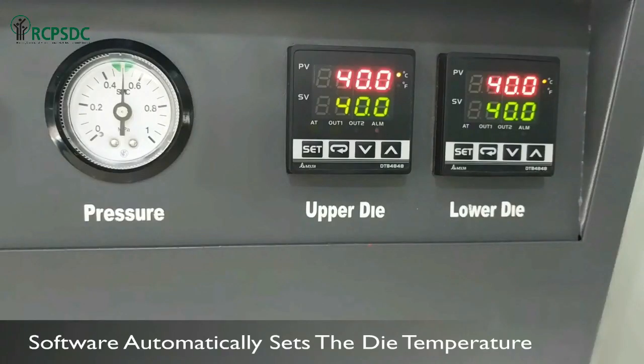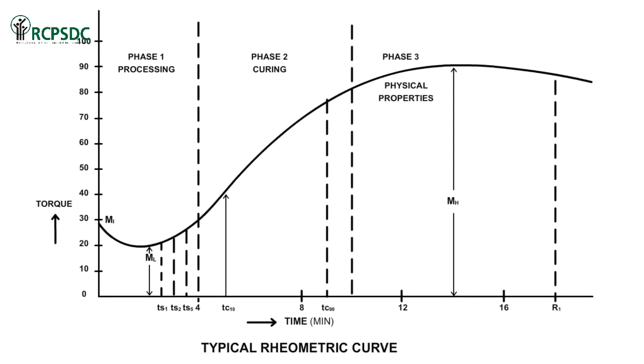Please ensure that pressure and die temperature is maintained throughout the test. A plot of measured torque value over time produces a typical curing curve. From the curve of torque versus curing time, all vulcanization characteristics of the rubber compound can be determined directly.